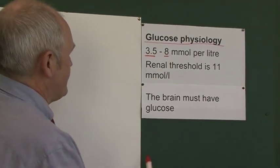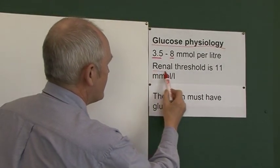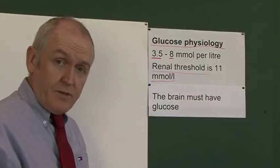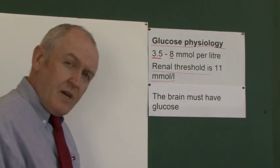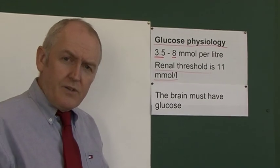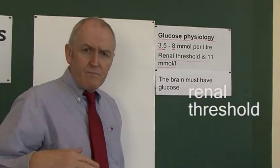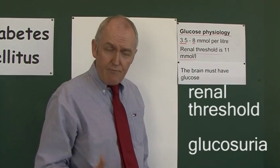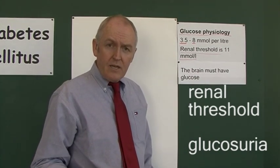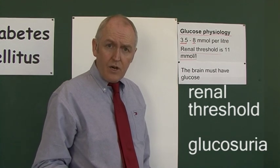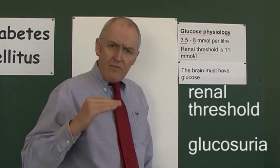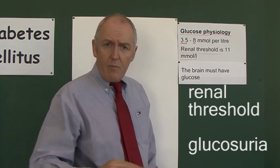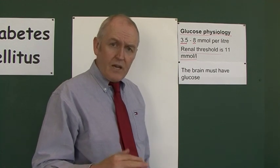The renal threshold is 11 millimoles of glucose per litre of blood. This is an important concept because when the glucose in the blood reaches the renal threshold, we'll start to see glucosuria — glucose will start to be present in the urine. Normally the urine contains no glucose at all, but if the blood glucose gets to 11 millimoles or higher, glucose will start to be lost in the urine.